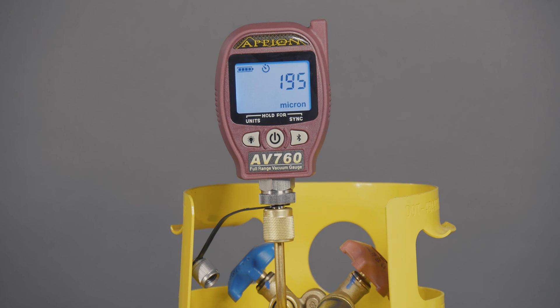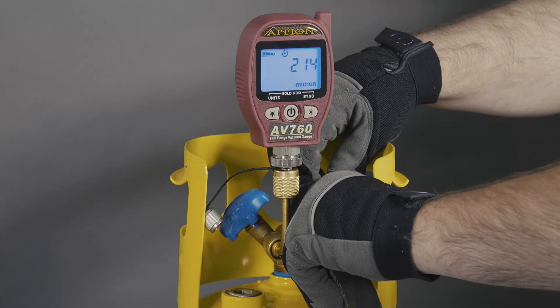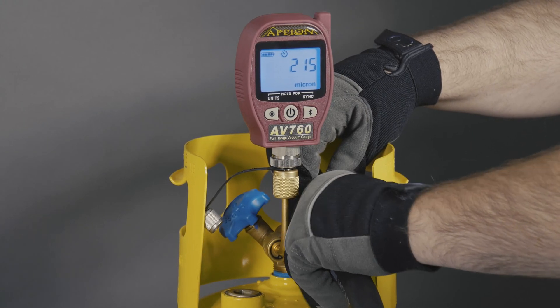Once the gauge reads below 200 microns, close the vapor port. After closing the port, turn the pump off and remove the hose.